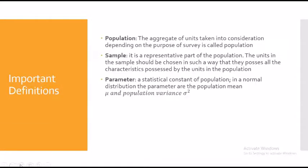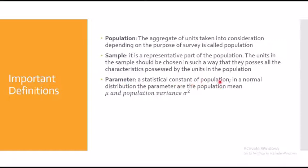Now, what is a parameter? From here on you will be hearing a lot about parameters, so keep in mind that a parameter is something associated with the population. It is a statistical constant of a population. For example, you may have studied the normal distribution — the parameters of a normal distribution are mu (μ) and sigma square (σ²), which represent the population mean and the population variance.